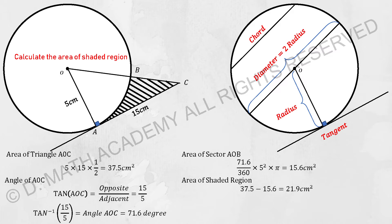So for the sector calculation, you'll be using 71.6 divided by 360 times 5 squared times pi, then you get 15.6. And for you to calculate the shaded region, just take the difference of this, then you will get 21.9.